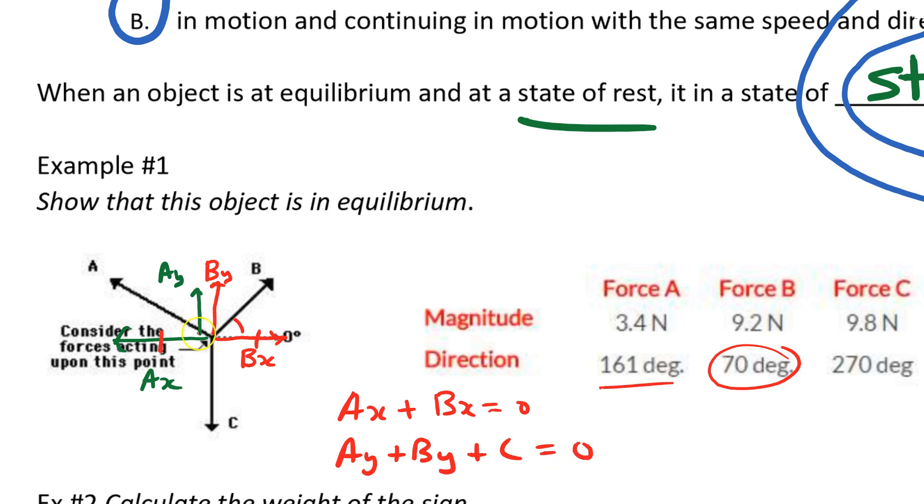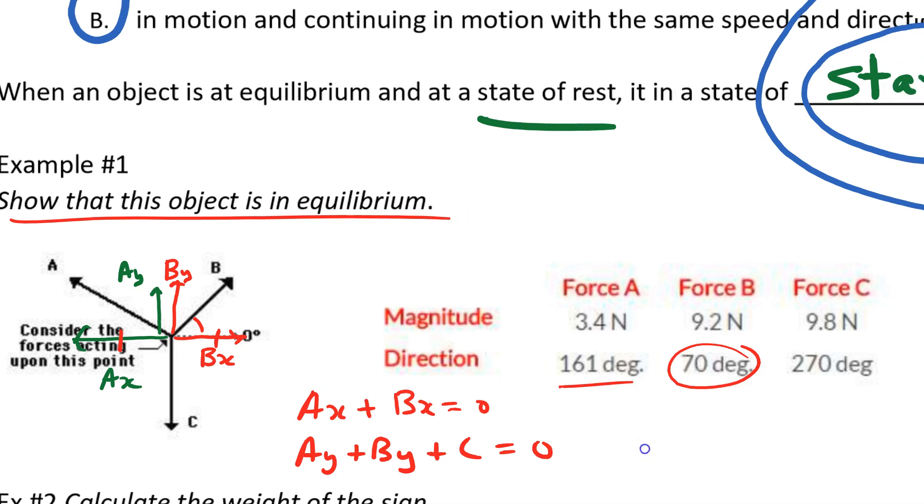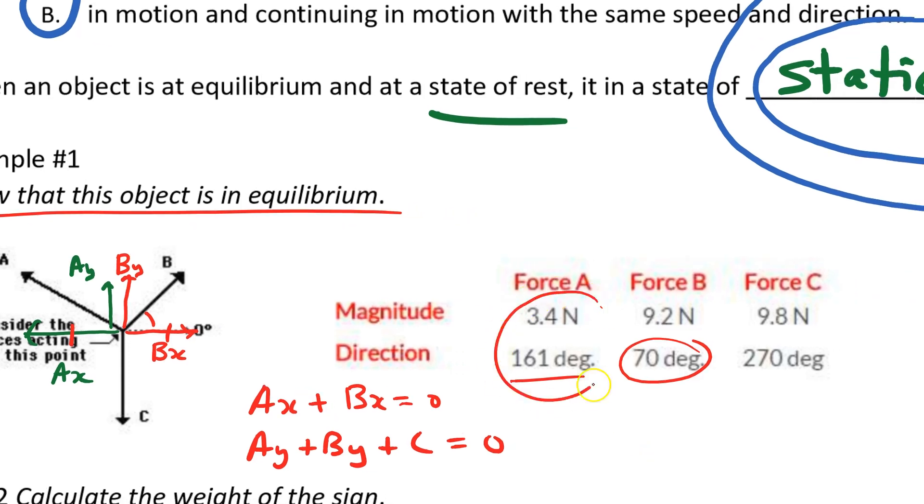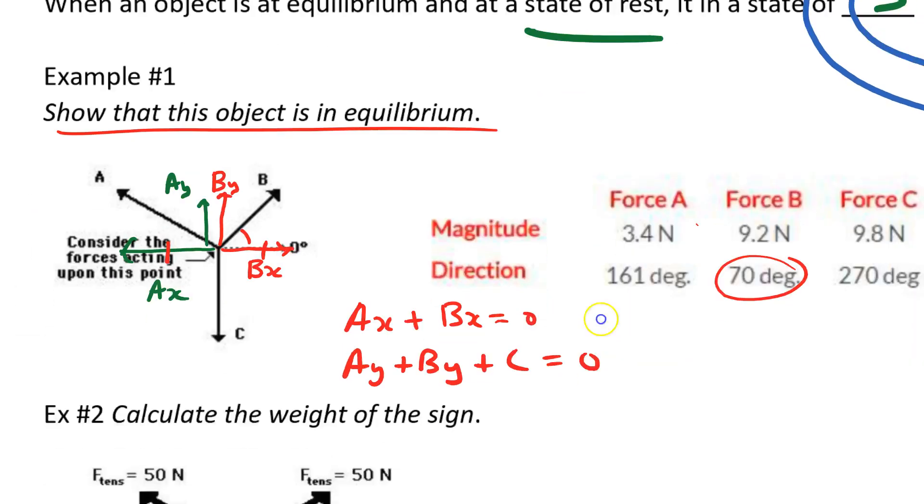In other words, if I looked at the length of that arrow, the length of that arrow, and added the two together, it'd be equal to the C downwards. That's how I could show that this object is in equilibrium. If I went through all the work of calculating all those numbers, and I'm not going to do that right now, it's just a quick example.